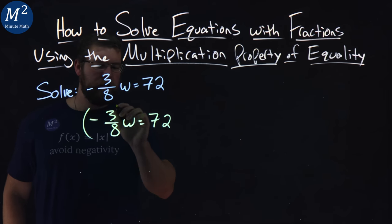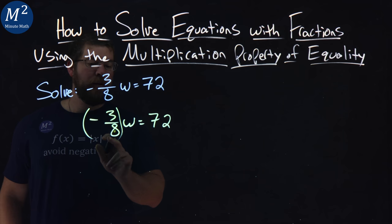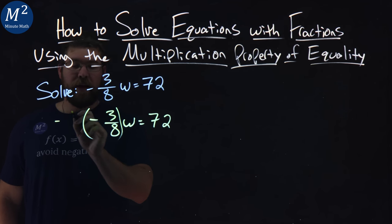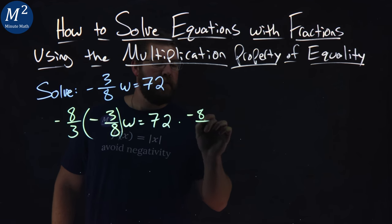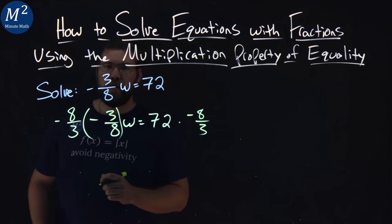So if I multiply the left and right hand side by the reciprocal of the coefficient, negative 3 eighths, a negative 8 thirds, right here to both sides of the equation, what happens?